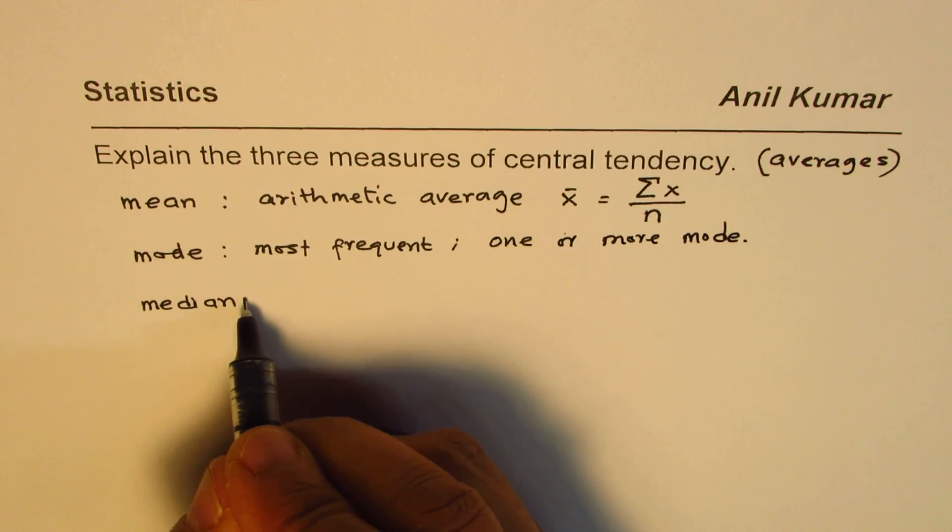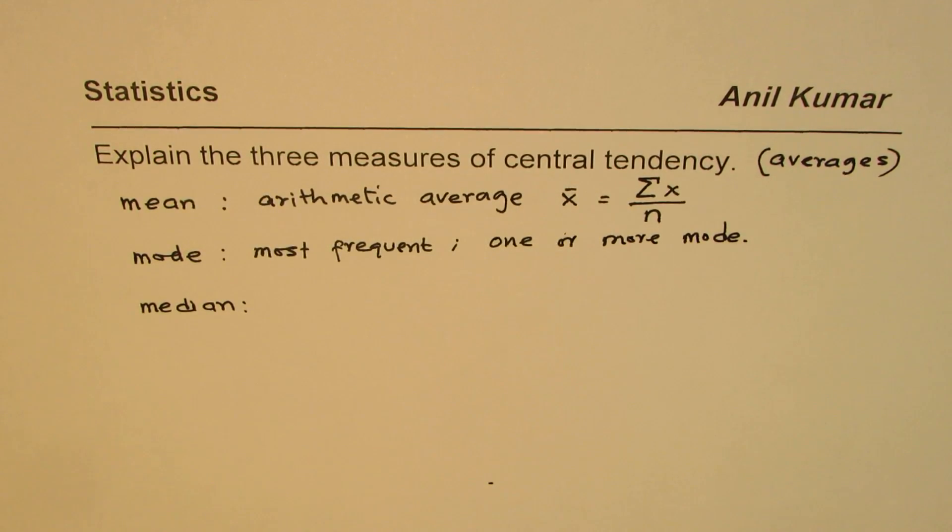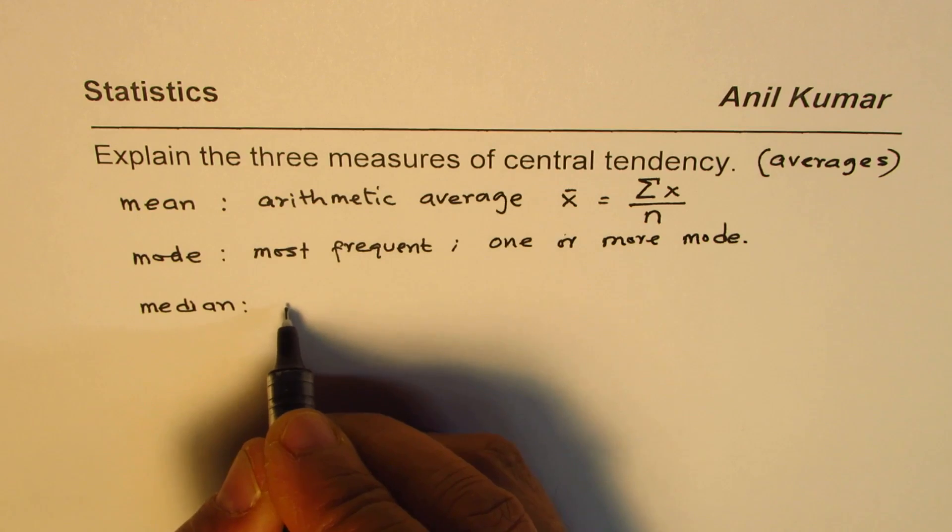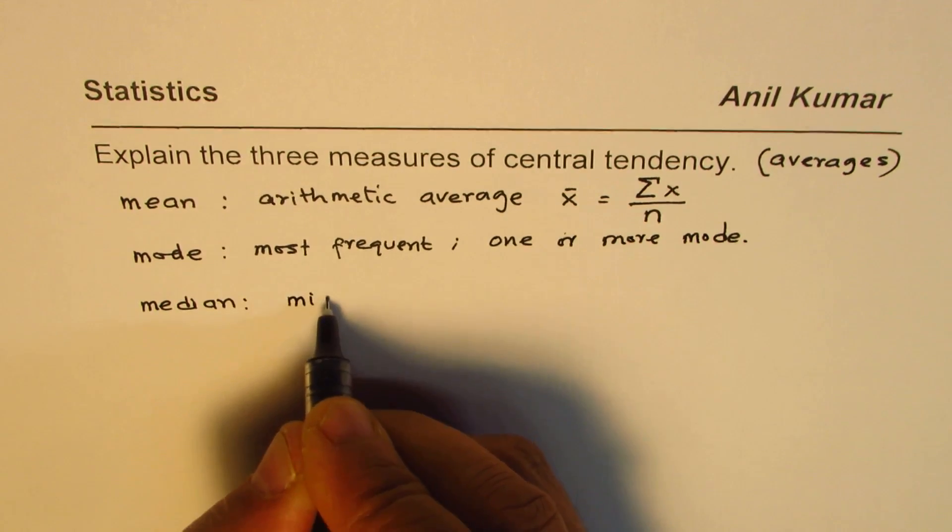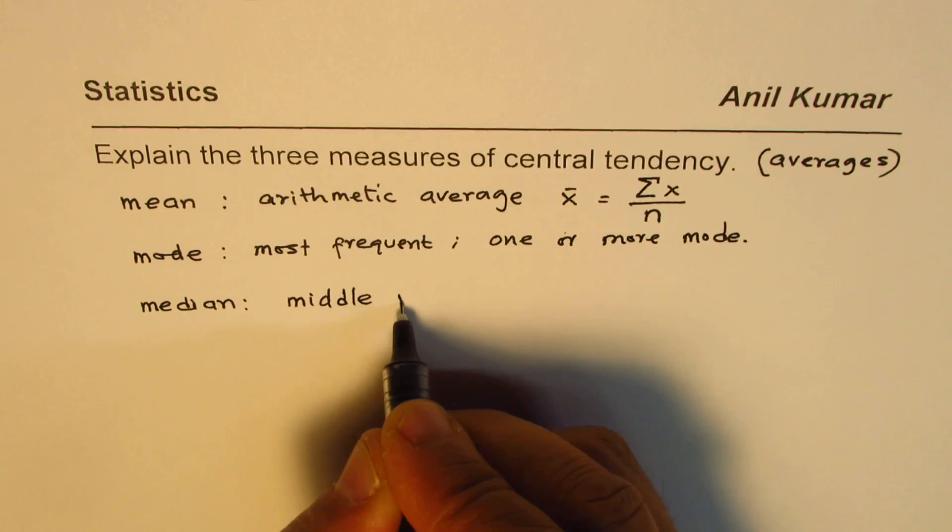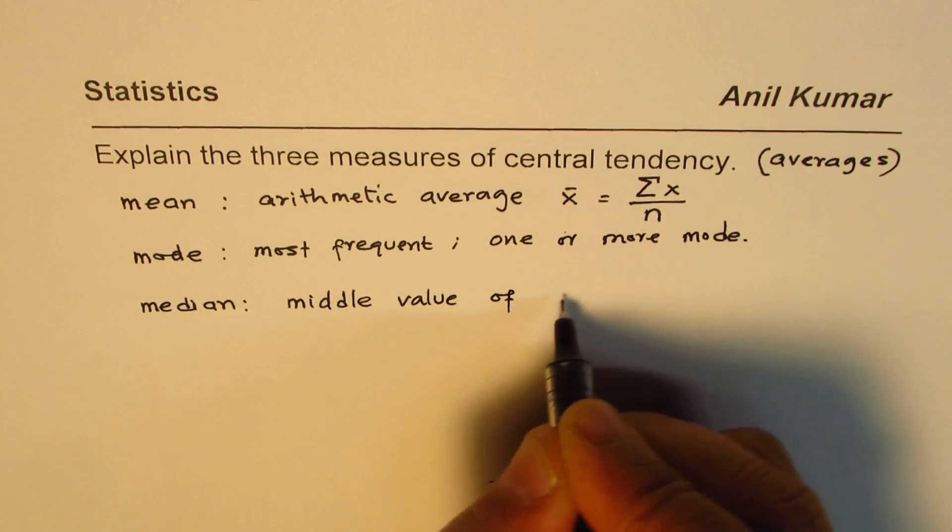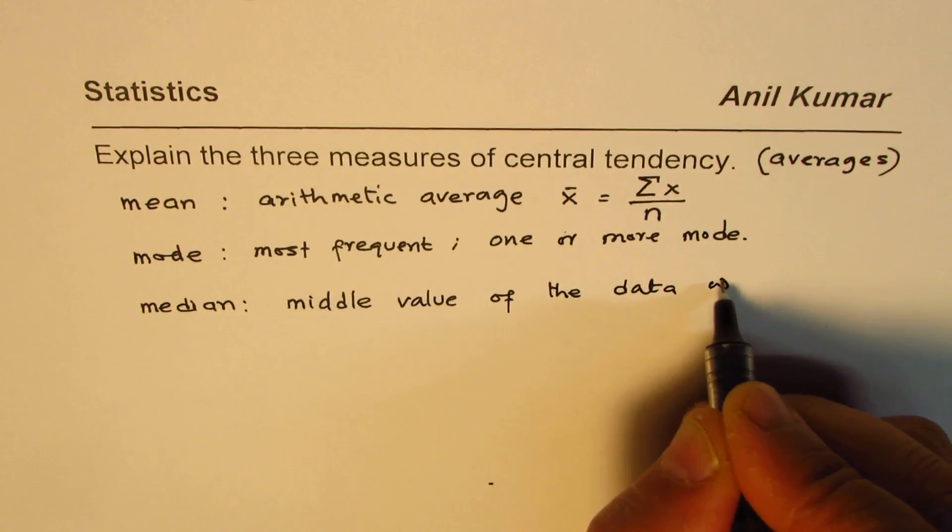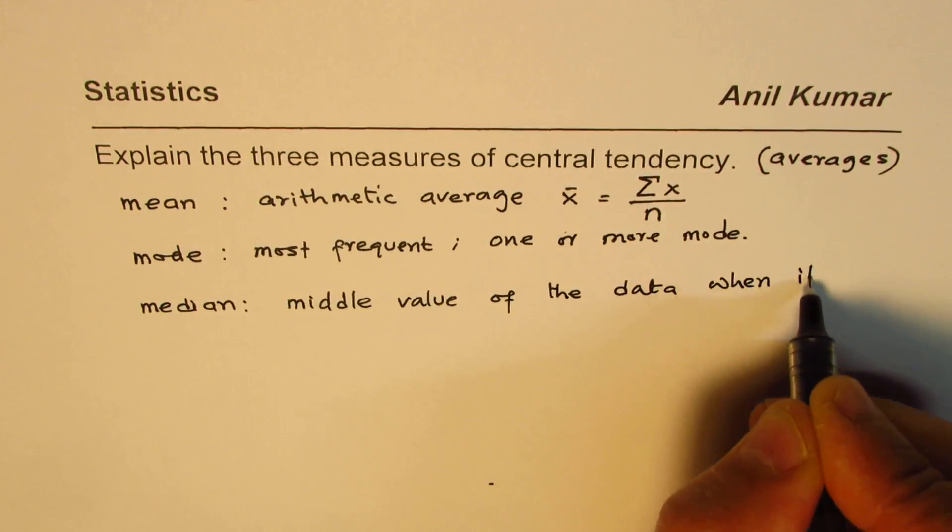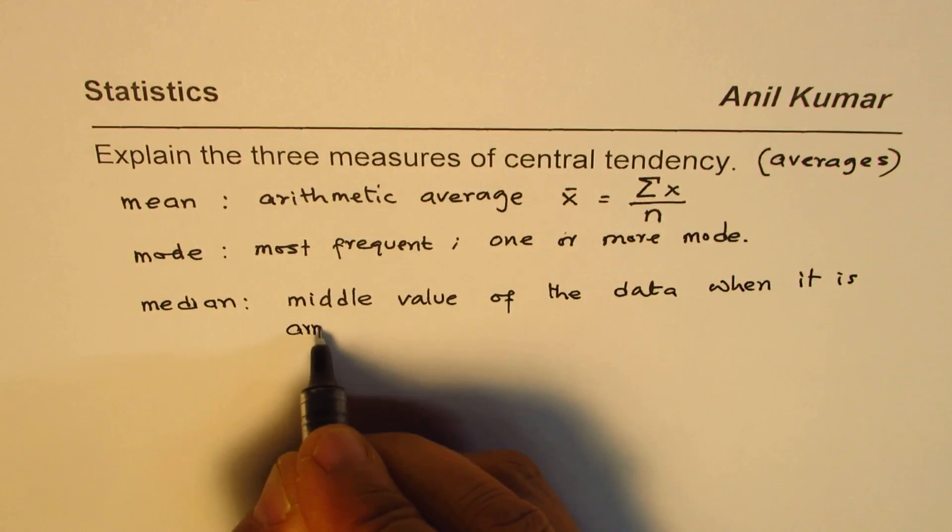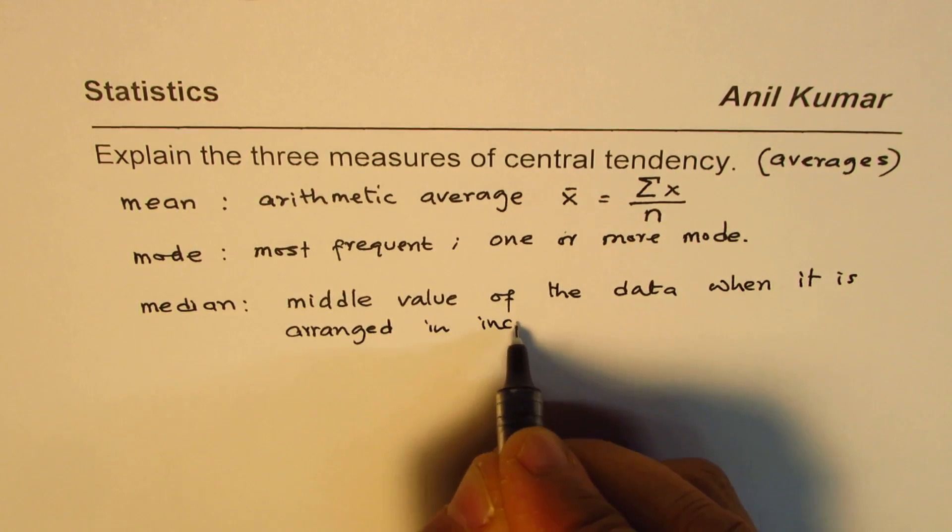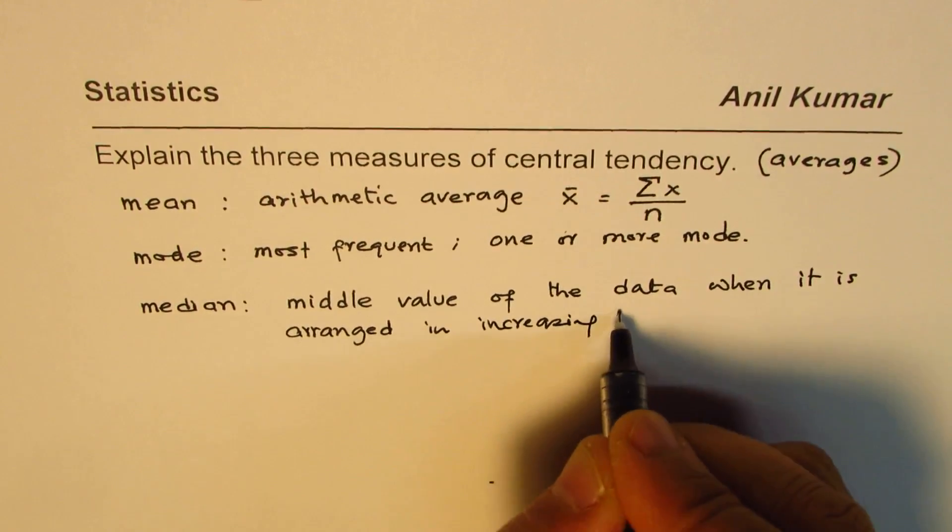Now what is median? Median is the middle value in the data. Median is normally referred to as the middle or central value of the data when it is arranged in increasing or decreasing order.